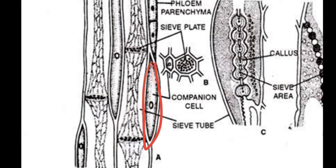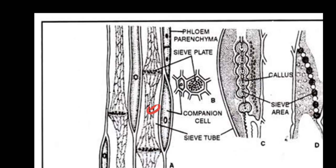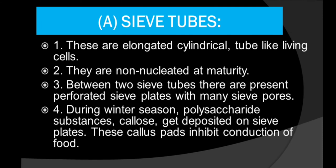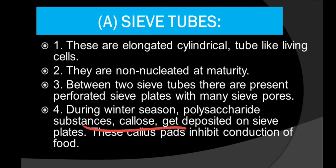Near each sieve tube, you will always find a companion cell which contains its own nucleus. The sieve tube and the companion cells are connected through pits and they help in the transport of food along with the sieve tubes. During winter, the polysaccharide substance callose gets deposited on the sieve plates, blocking food transfer. As soon as the spring season comes, the callose dissolves and food transfer resumes. The transfer of food through the phloem is known as translocation.